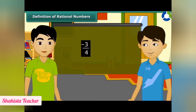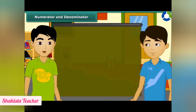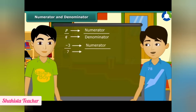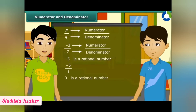Minus 3/4 is also a rational number because P = -3 and Q = 4, and both are integers. In rational number P/Q, P is the numerator and Q is the denominator. For example, in -3/7, the numerator is -3 and the denominator is 7. Integers are also rational numbers — for example, the integer -5 can be written as -5/1, and 0 can be written as 0/2 or 0/7, etc.